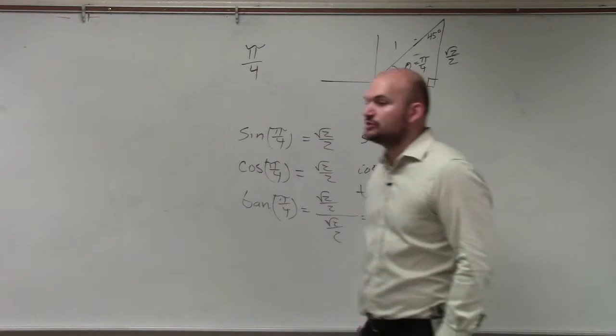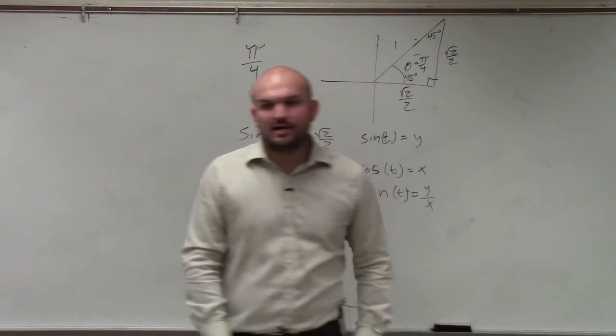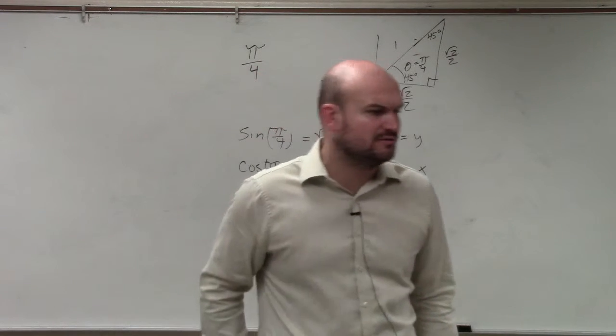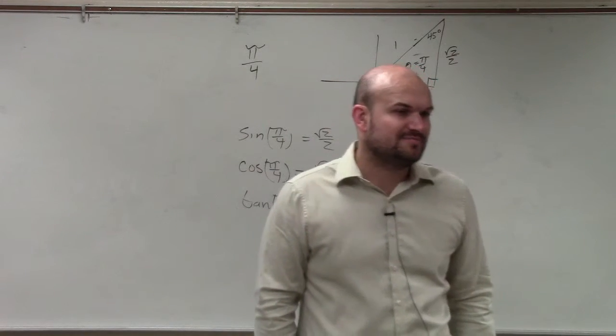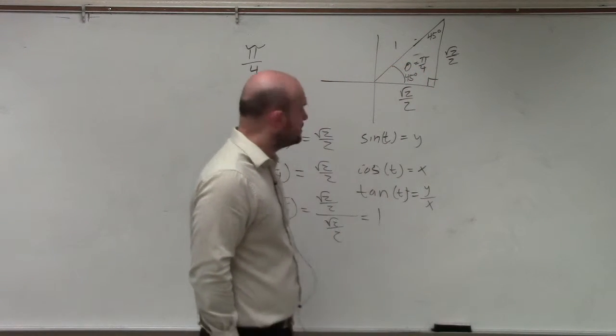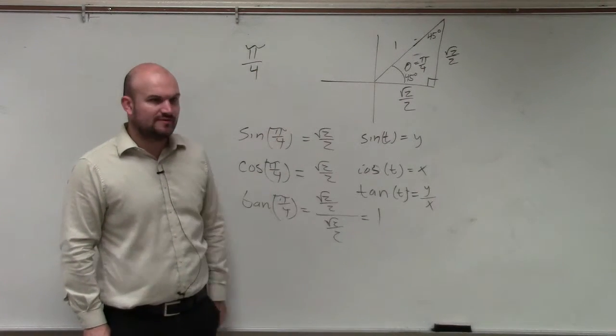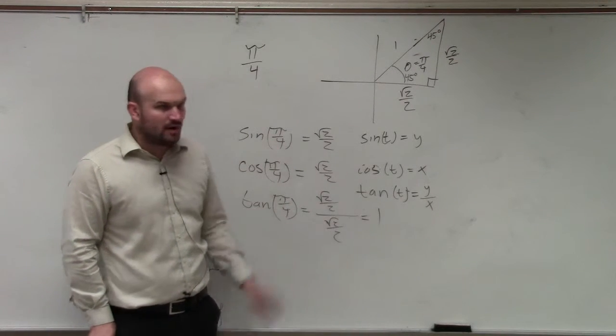Could anybody take out their unit circle and verify my answers for the cosine of π/4, or 45 degrees? Could you guys just go and look at your unit circle, and just make sure that the sine of π/4, the y-coordinate is square root of 2 over 2, the x-coordinate is square root of 2 over 2, and the tangent, if you divided y over the x-coordinate, you would get 1.